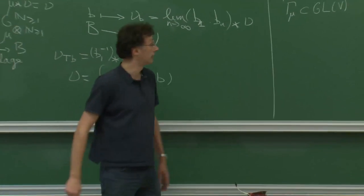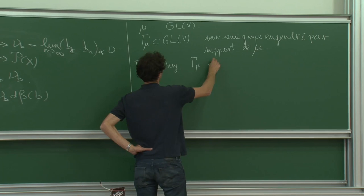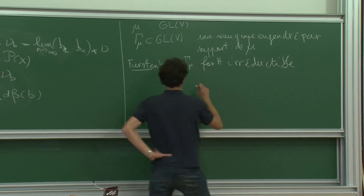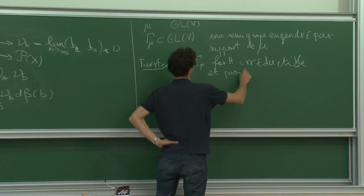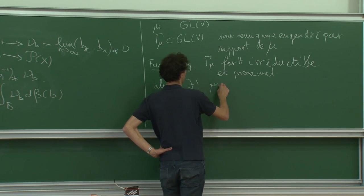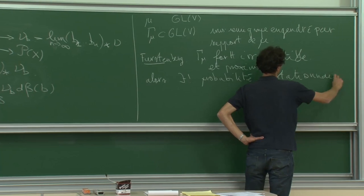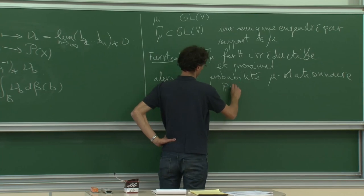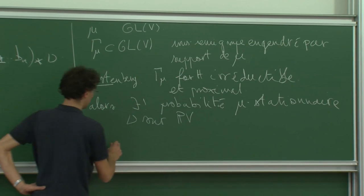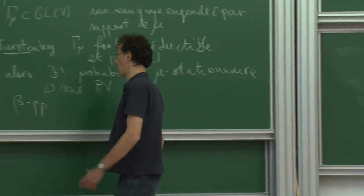J'ai rappelé un théorème de Furstenberg qui dit que si gamma_mu est fortement irréductible — c'est-à-dire qu'il ne préserve pas de réunion finie de sous-espaces vectoriels dans V — et s'il est proximal, alors il existe une unique probabilité mu-stationnaire nu sur l'espace projectif PV. Cette probabilité hérite du fait que gamma_mu est proximal : bêta-presque pour tout B dans B, la mesure de bord nu_B est une masse de Dirac.